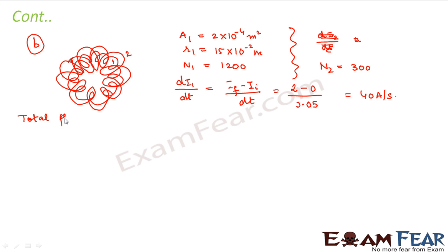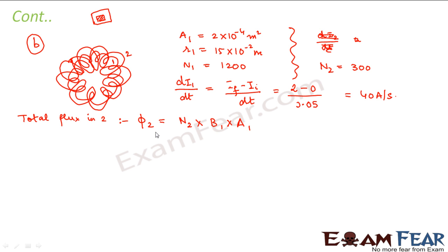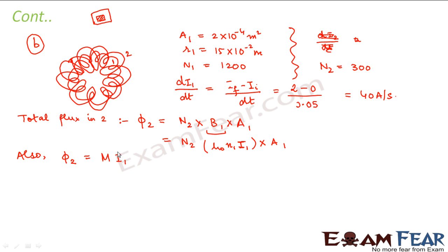Let us calculate the total flux in the outer coil — coil 2. That will be φ₂ = N₂ × B₁ × A, where B₁ is the magnetic field produced by the inner coil. Since the outer coil is bigger but wound closely, the effective area is still A₁ — the area of the smaller coil. So this becomes N₂ into B₁, where B₁ = μ₀n₁I₁, into A₁. We also know that φ₂ = M × I₁, since the flux of coil 2 depends on the current through coil 1.